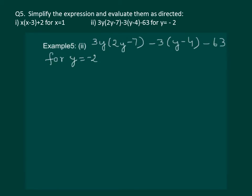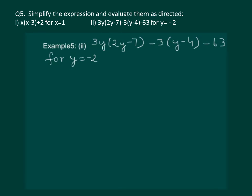Just analyze this question. We have a monomial 3y which is to be multiplied by 2y minus 7, that's a binomial. Then again we have minus 3, a monomial, to be multiplied by y minus 4. And then we have to subtract 63 from it. We will get an algebraic expression in terms of y and finally we will substitute y equal to minus 2 to get a numerical value.